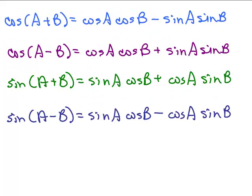Here are all four trig identities for the cosine and sine of the sum or difference of two angles. The way I remember it: for the cosine, whatever sign is inside the parentheses, it's the opposite sign in the formula. For the sine of a sum it's still a plus, and for the sine of a difference it stays a minus. For cosine it goes cos cos then sine sine, and for the sine it goes sine cosine then cosine sine — both times following a, b, a, b.